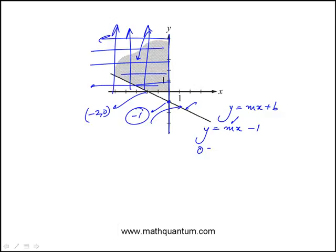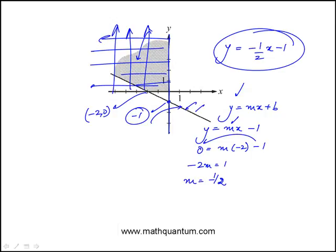So when x is minus 2, y is 0. So that means minus 2m is 1. I just moved that over, which means m is minus half. So the equation is y equals minus half x minus 1. That's the equation of this line.